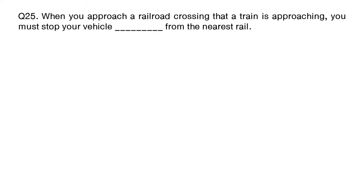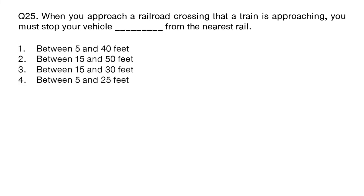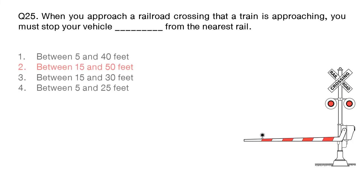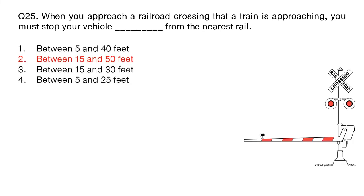Question: when you approach a railroad crossing that a train is approaching, you must stop your vehicle how far from the nearest rail? Option number 1: between 5 and 40 feet. Option number 2: between 15 and 50 feet. Option number 3: between 15 and 30 feet. Option number 4: between 5 and 25 feet. The answer is option number 2: between 15 and 50 feet.